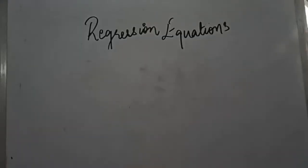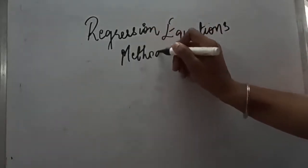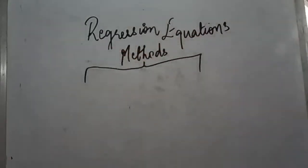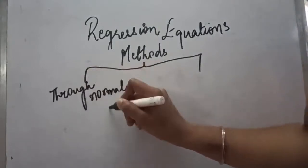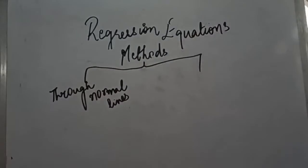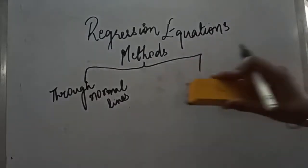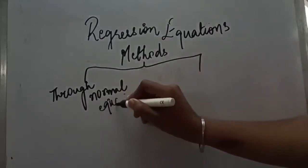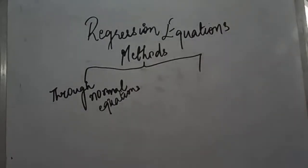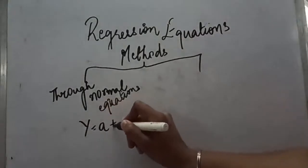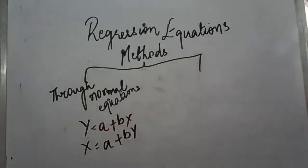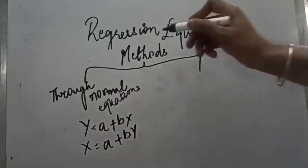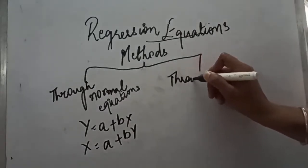To calculate the regression equations, we have basically two methods. The first method is regression equations through normal equations, where we calculate x on y and y on x using the normal equations y equals a plus bx and x equals a plus by. The second method is through regression coefficients, where we use regression coefficients to find both equations x on y and y on x.